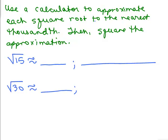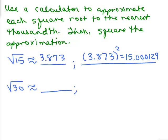Let's use a calculator to approximate each square root to the nearest thousandth. Try the square root of 15 with your calculator. You should get 3.873 — remember the thousandths place is three places after the decimal point. In your calculator it probably comes out to 3.87298 and so on, but you round to the nearest thousandth to get 3.873. If you take that approximation and square it, you get 15.000129 — not exactly 15, a little bit bigger, but a pretty good approximation.